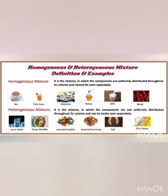Homogeneous mixtures can be defined as mixtures in which the components are uniformly distributed throughout its volume and cannot be seen separately. Examples include milk, blood, and tea.